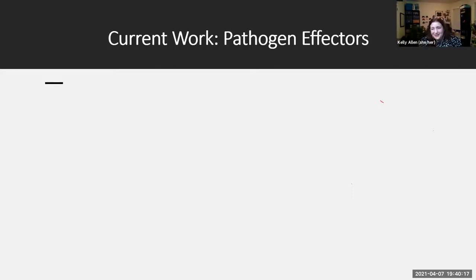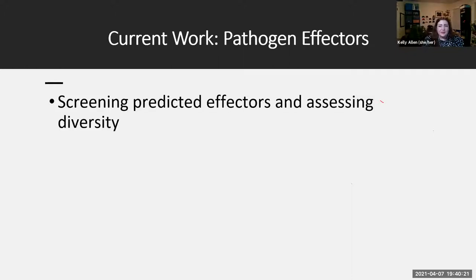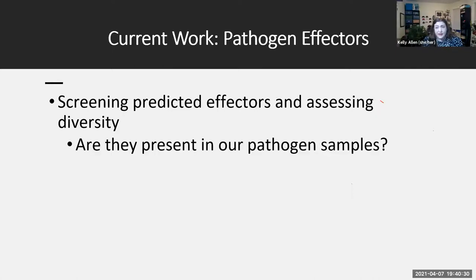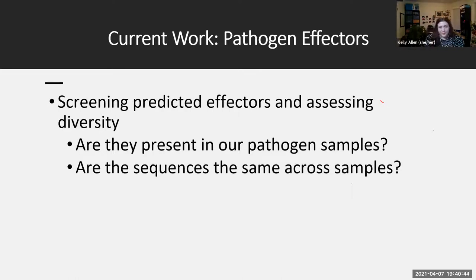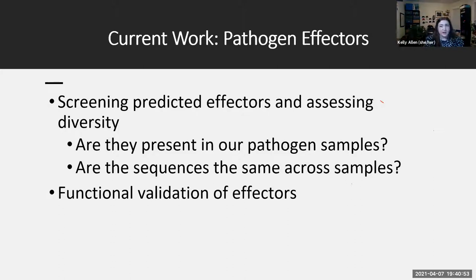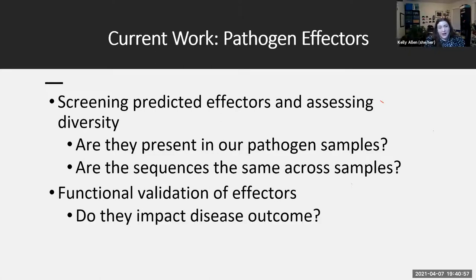Currently, me and one of my undergraduate researchers — who is here tonight and is fantastic — are working on screening these predicted effectors and assessing the diversity across a collection of pathogen isolates I've been collecting over the last few years. We want to know if all of these pathogen effectors predicted from the original RNA-seq dataset are present in all of the pathogen samples, and if so, whether the sequences are the same or have different levels of polymorphisms. Furthermore, we would like to do some functional validation of these effectors — measuring whether they actually impact the disease outcome — which will give us a clue that these are real effector genes. We can then use those for diagnostic assays and identifying new sources of resistance.